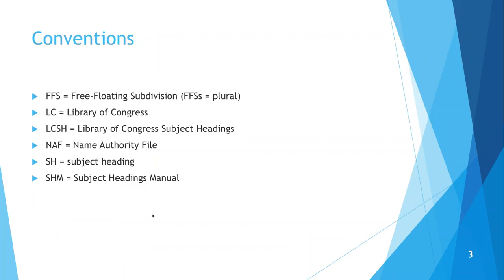I'll cover a couple of conventions before we get started. I use a couple of acronyms throughout the slides. Free-floating subdivisions is very difficult to say quickly, so FFS is the abbreviation. LC stands for Library of Congress, and LCSH for Library of Congress Subject Headings. The name authority file is often abbreviated as NAF. SH is short for Subject Heading, and SHM for the Subject Headings Manual.